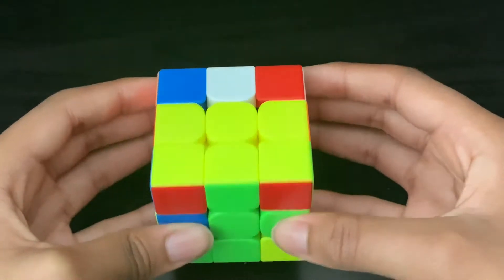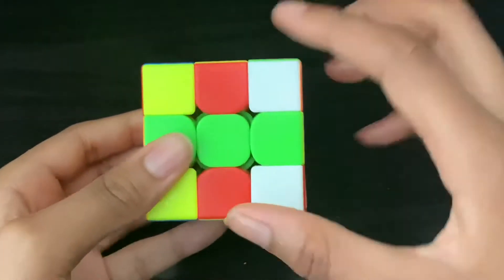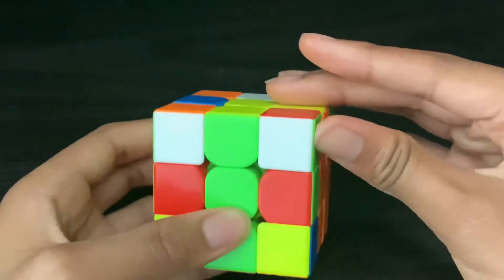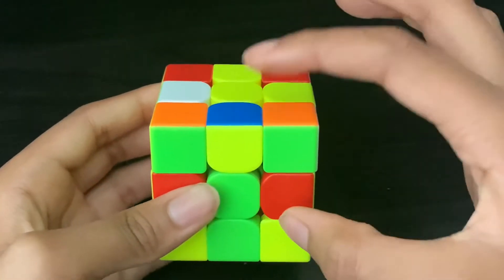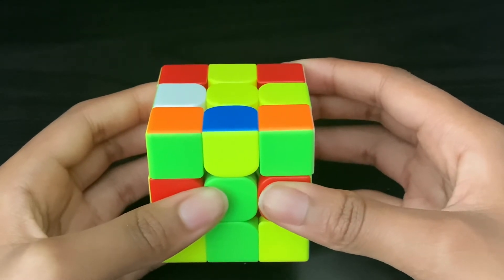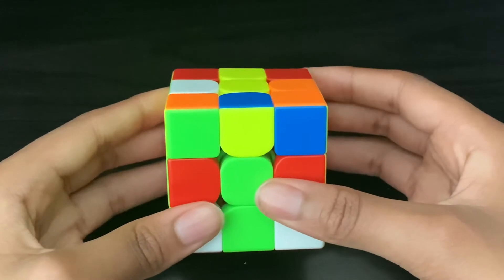The second case is when you have two edges misoriented. You put the first bad edge in the middle layer and the second bad edge in the UF position. Now you swap these two edges with R U' R', insert, R U' R'.